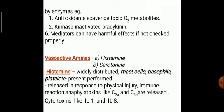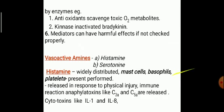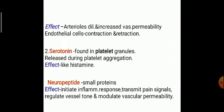Vasoactive amines are histamine and serotonin — both are vasoactive amines. Histamine is widely distributed; it is seen in mast cells, basophils, and platelets, and is present in pre-formed state. It is released in response to physical injury, immune reactions, and anaphylatoxins like C3A and C5A, and cytokines like interleukin-1 and interleukin-8. The effect of histamine is arterial dilatation and increased vascular permeability.